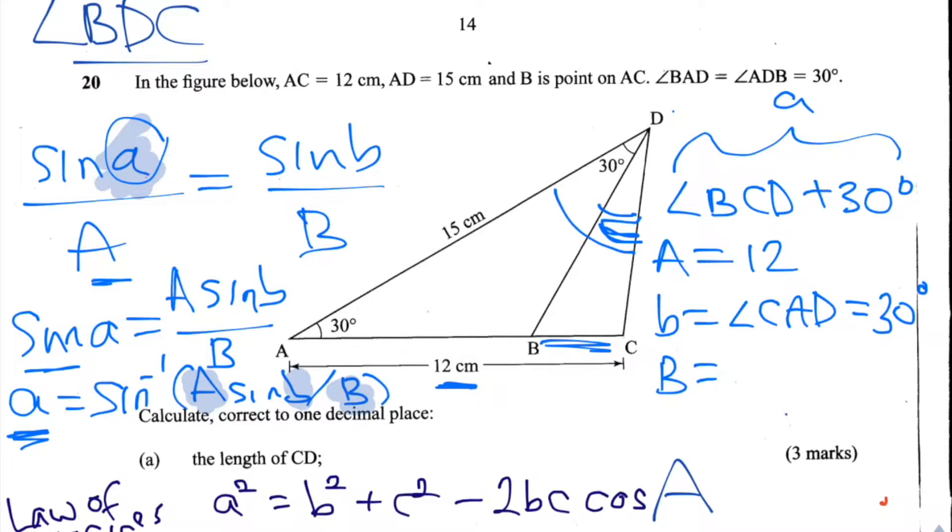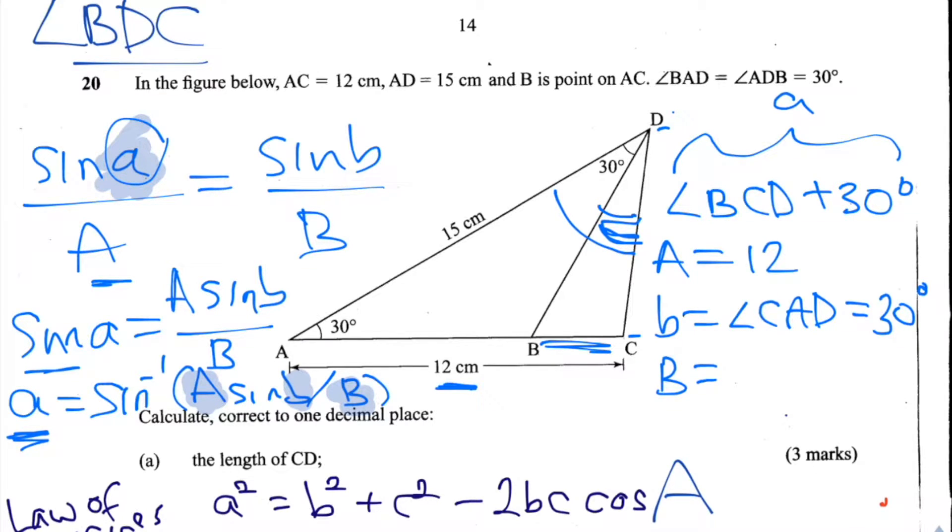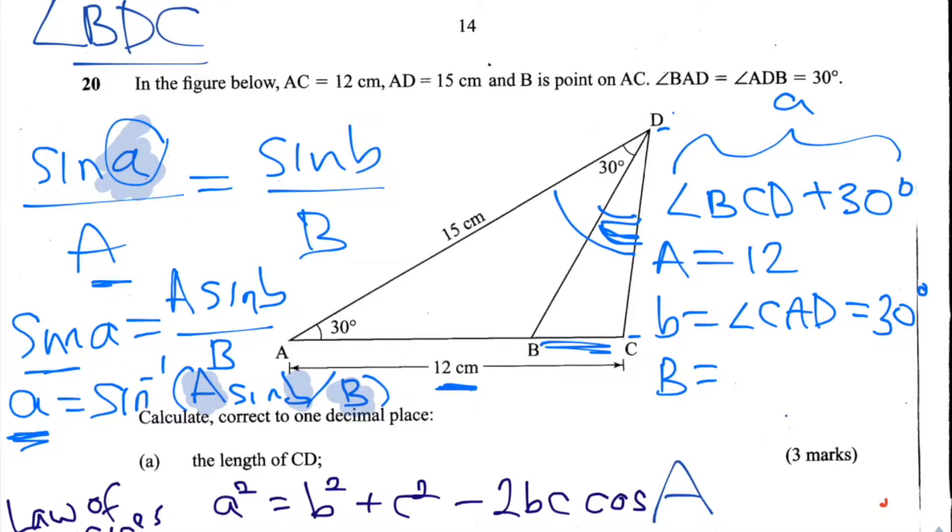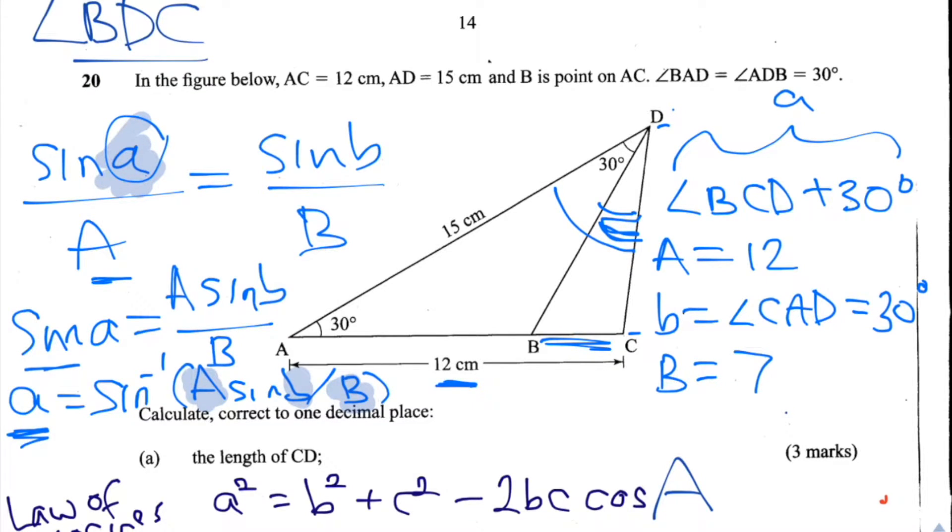How about for our big B? It would be this length here, CD. We calculated CD as 7.6 previously, and it might be better for us to work to more than one decimal place. So we'll put CD as 7.565.